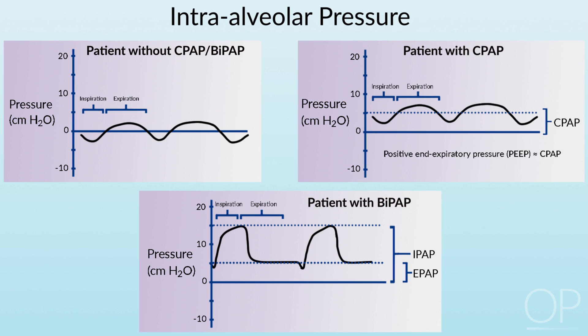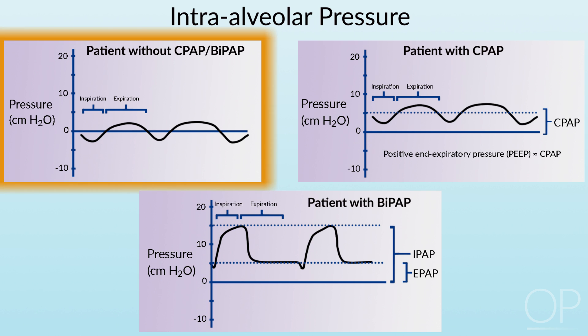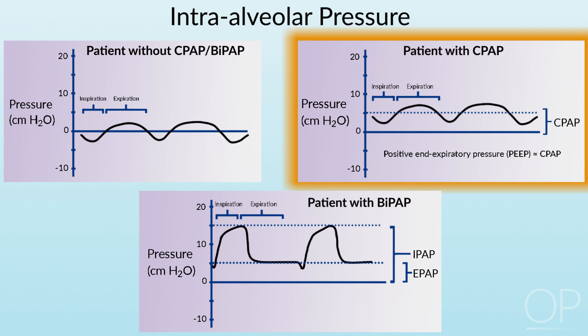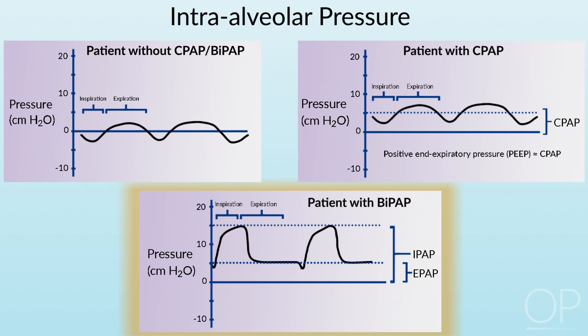Three more curves to consider, representing measurement of alveolar pressure. The top left shows a normal patient without any positive pressure ventilation, where pressures cycle below and above zero throughout the respiratory cycle. The top right figure shows a patient on CPAP, and the bottom figure shows a patient on BiPAP.